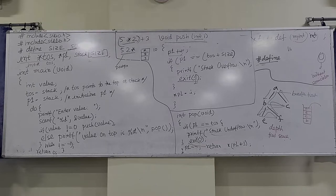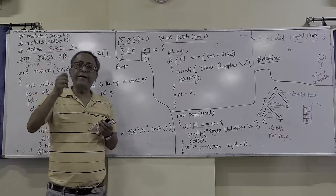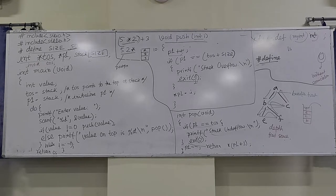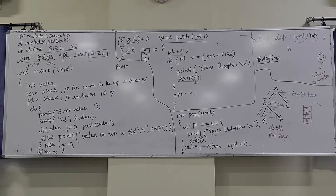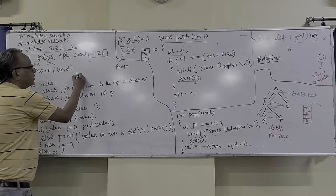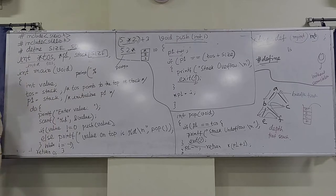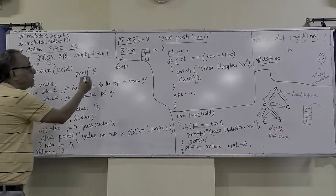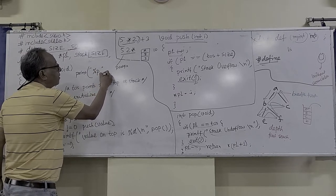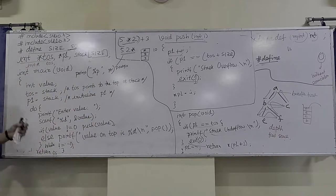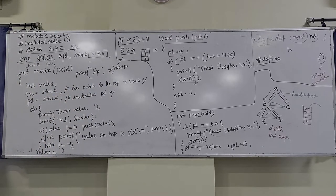Some of you have asked about pointers. A pointer is an actual address. Here we have a pointer, this is a pointer. You can always print a pointer — if there is a segmentation fault, it is better you print that pointer. To print a pointer, always use the %p format specifier, and print the value of that pointer.